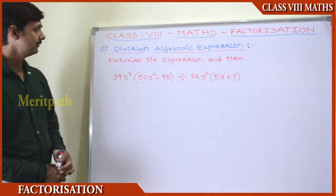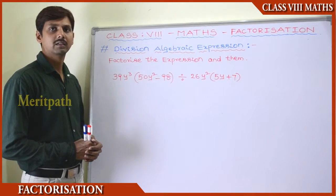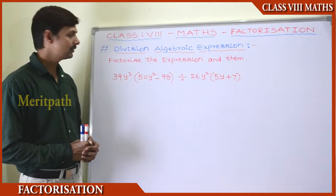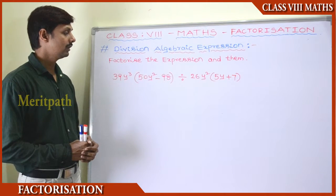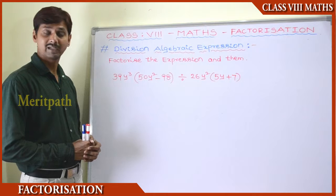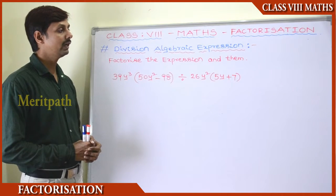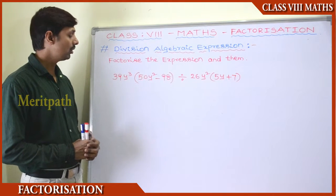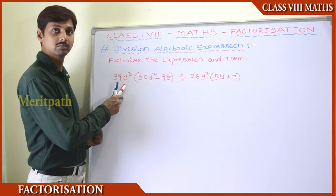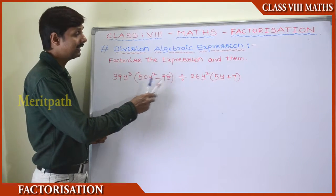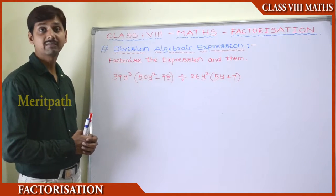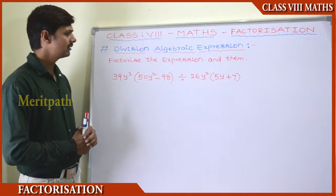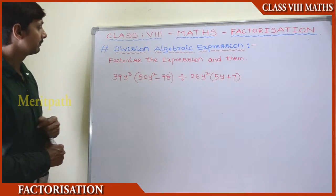Let's characterize this expression. We need to divide these two algebraic expressions: 39y³ into (50y² − 98), divided by 26y² into (y into 5y + 7). Let's recall: 39y³(50y² − 98) divided by 26y²(5y + 7). So let's divide these two algebraic expressions.